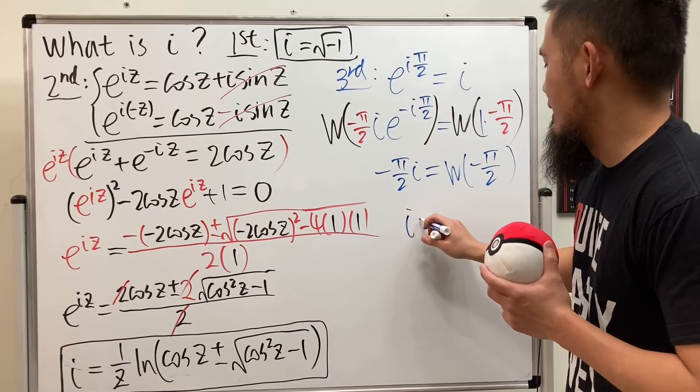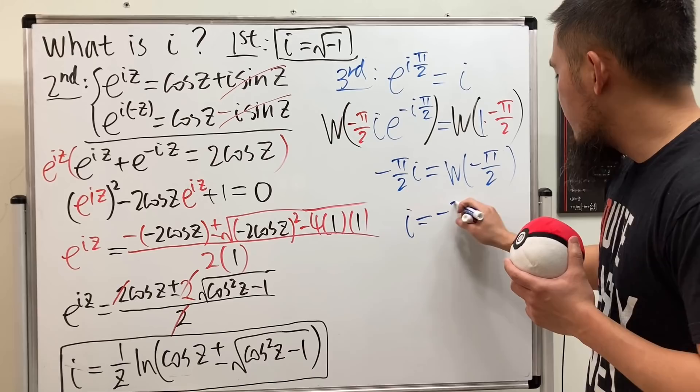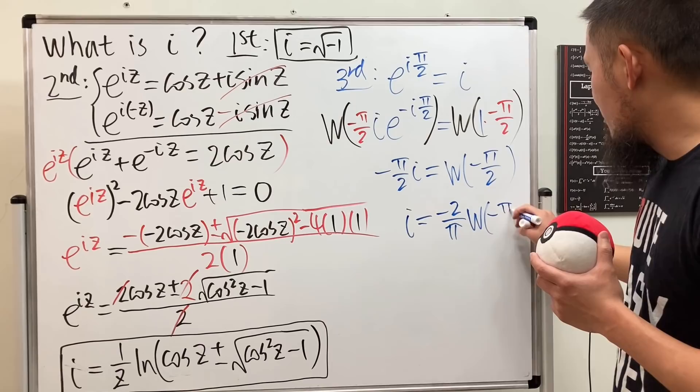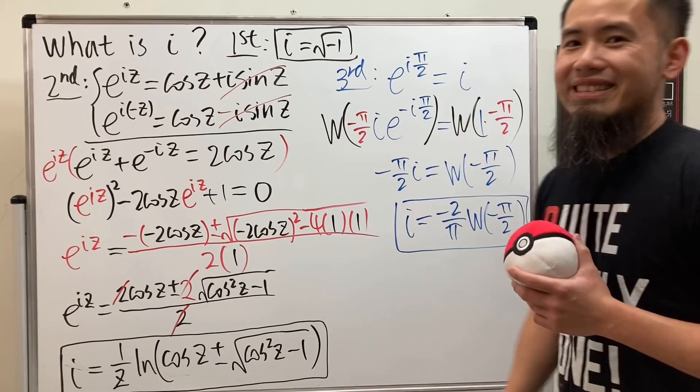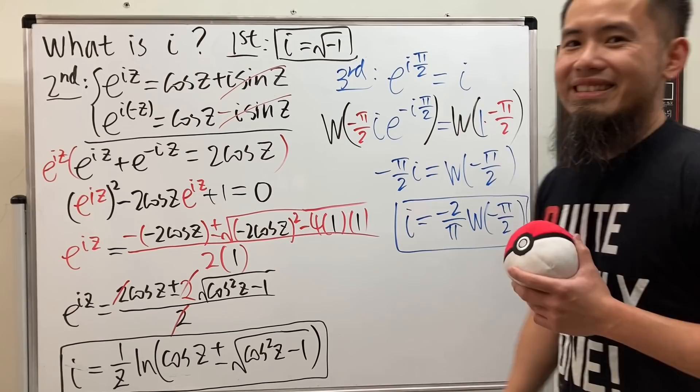Finally, if you want to know what i is, I can tell you i is just equal to you multiply by the reciprocal of that, which is negative 2 over pi times the Lambert W function of negative pi over 2. So next time, when somebody is asking you what is i, you have more options now. At least you have two more options. And if you have other ways to tell people what is i, you can leave a comment down and let me know. So thank you for watching. That's it.